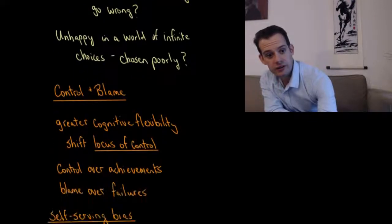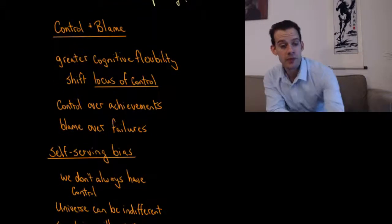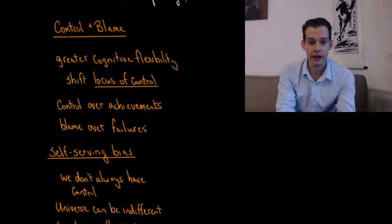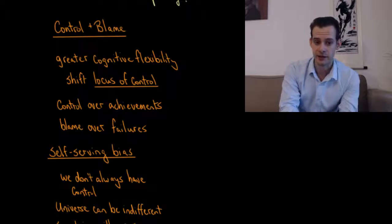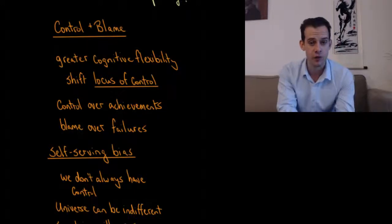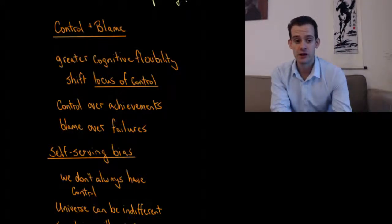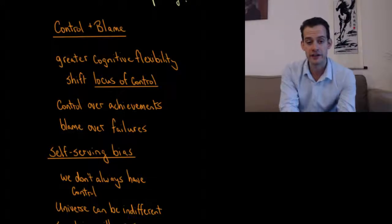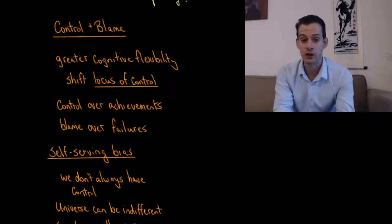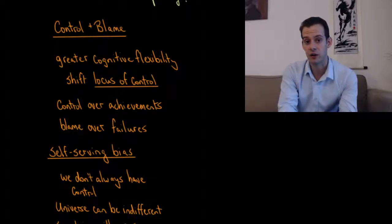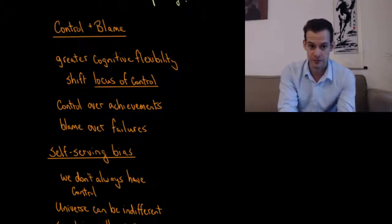And so this brings us to consider the relationship between control and blame. And what we might want is greater cognitive flexibility where we can shift our locus of control depending on the circumstances. So you might recall Julian Rotter's idea of locus of control. This is an internal locus of control where we believe that we are responsible, versus an external locus of control where we believe that something outside of us is responsible.